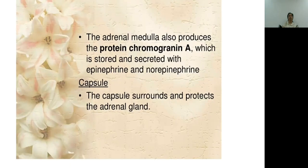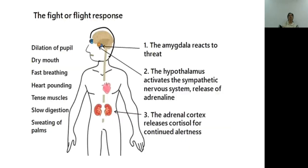The adrenal medulla also produces chromogranin proteins, which are stored and secreted along with epinephrine and norepinephrine. The fight-or-flight response is triggered when there is a sudden shock — fear or threat. In response, you either fight (face the threat) or take flight (escape from it).